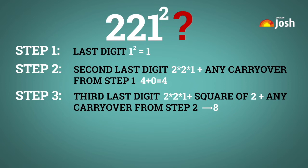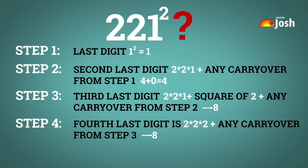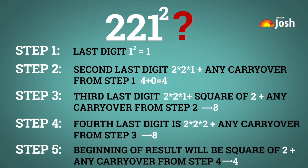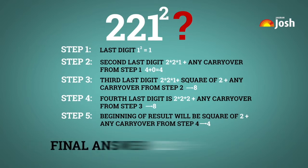Step 4: The fourth last digit is 2 × 2 × 2 plus any carryover from step 3. The answer here is 8. Step 5, the final step: the beginning of the result will be square of 2 plus any carryover from step 4, giving 4. Hence, the square of 221 is equal to 48841.